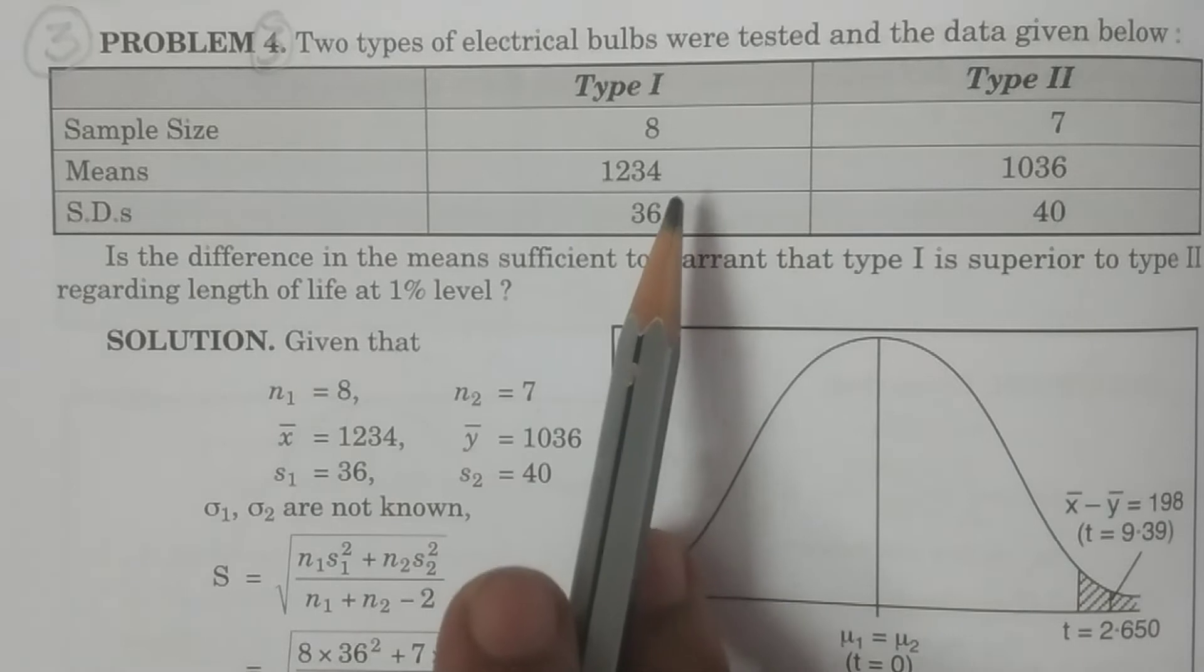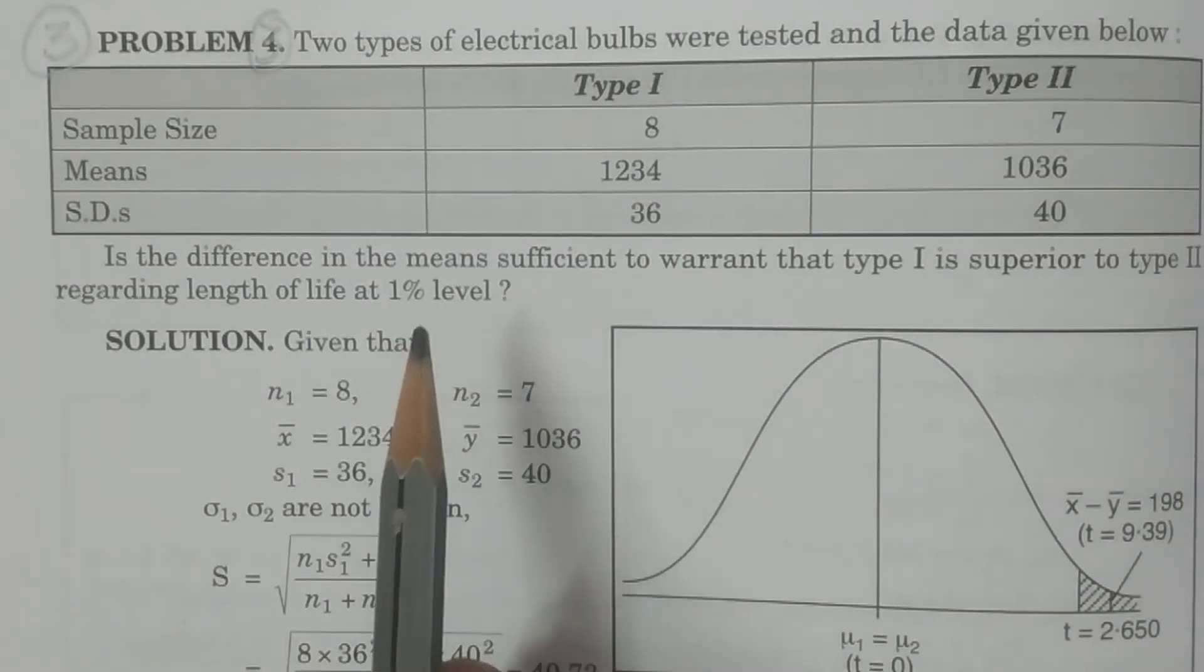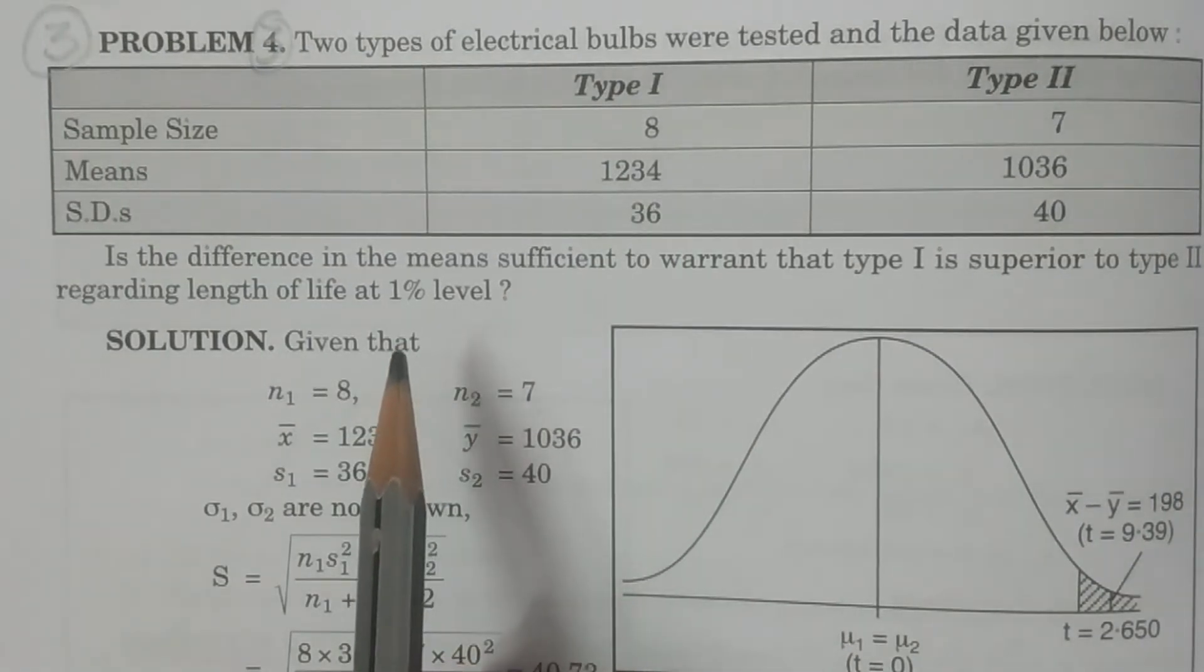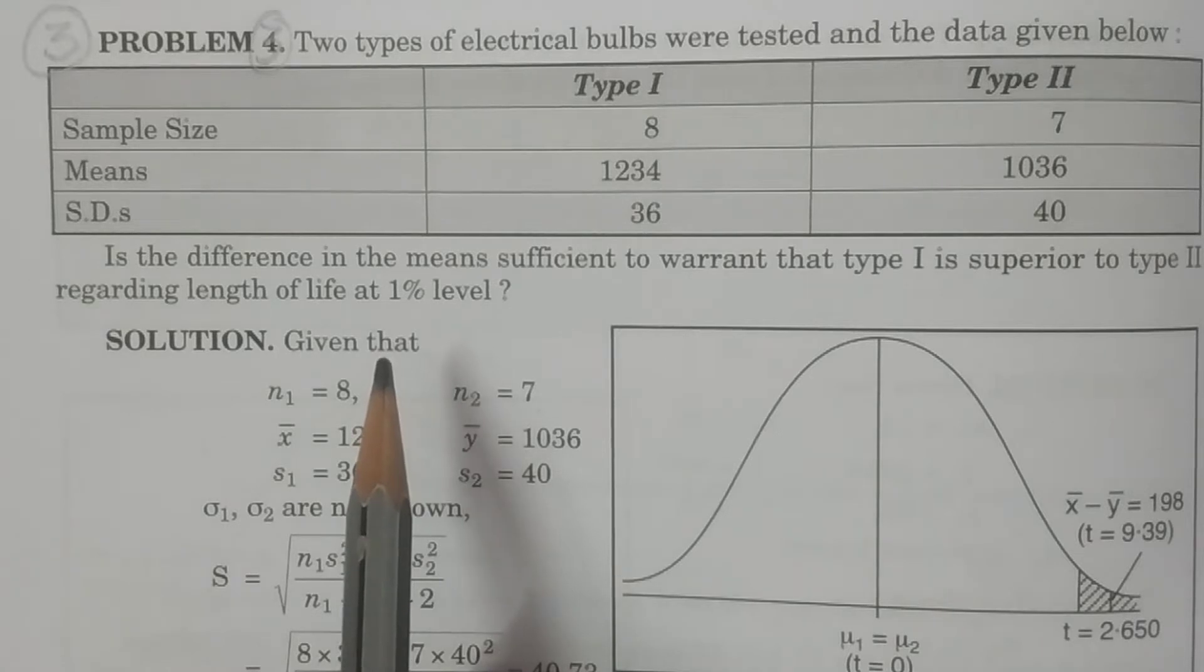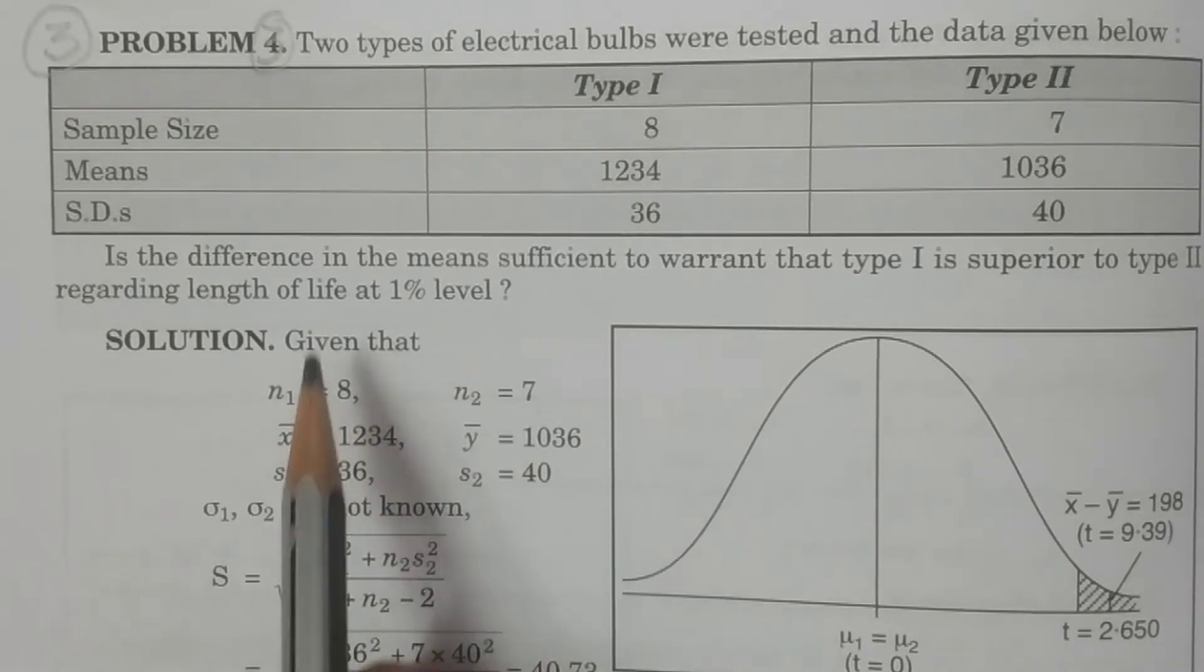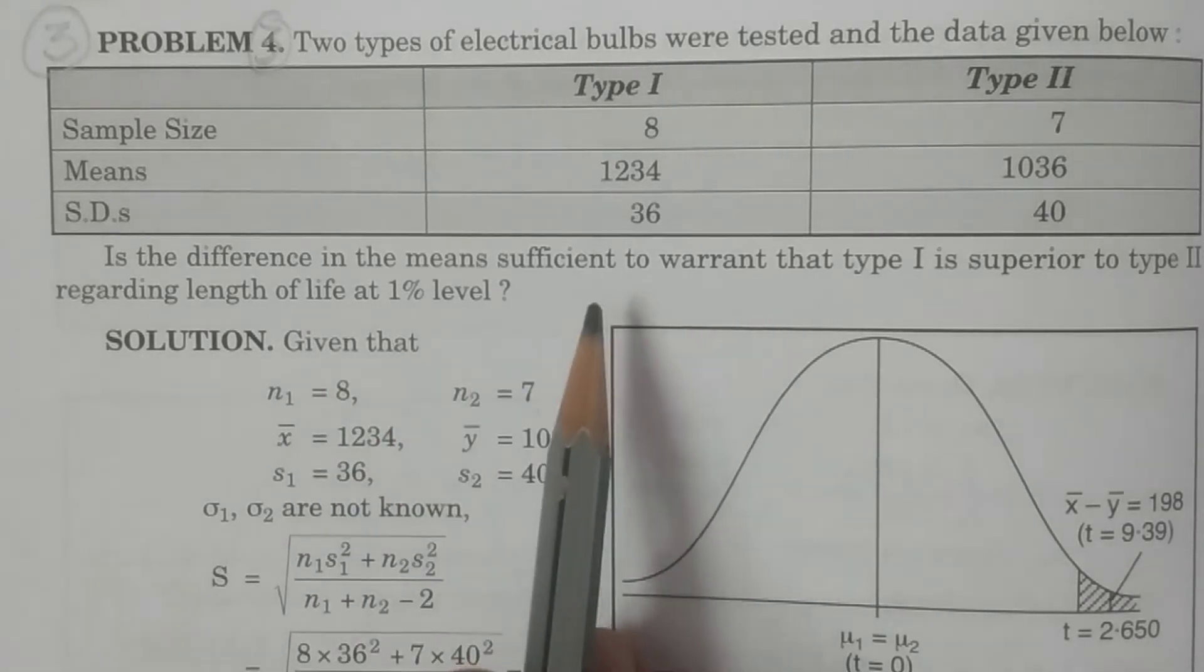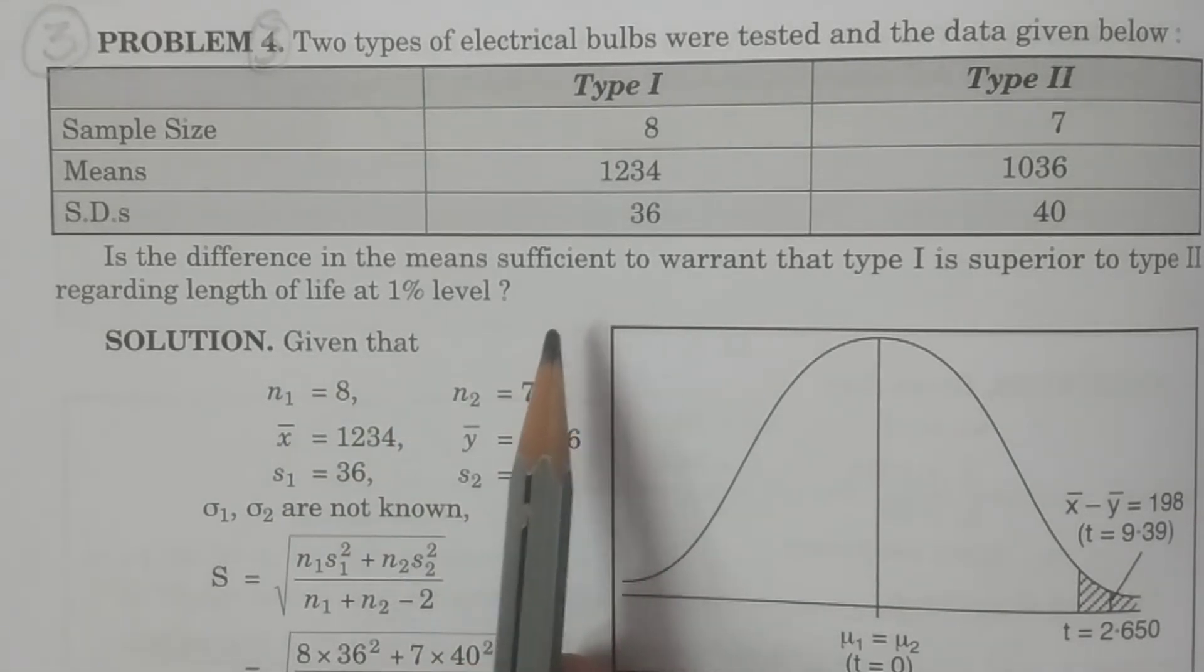So in the small sample case, when do you use t-test? When sigma is not known. If sigma is known, we use normal distribution and the test procedure of large sample. Whereas, if sigma is not known, then we use t-distribution.